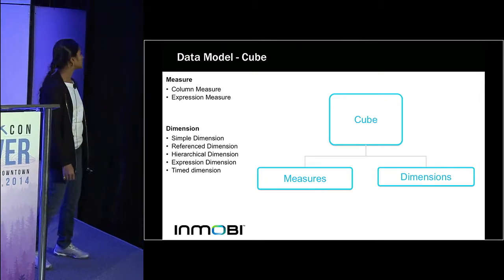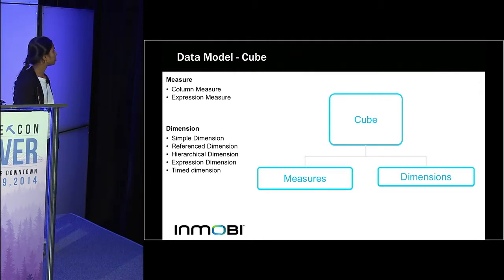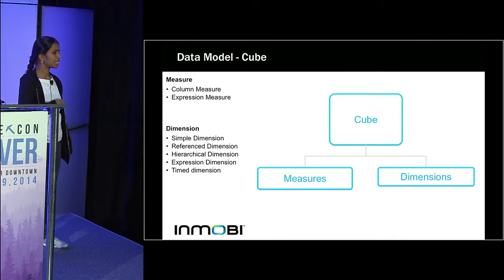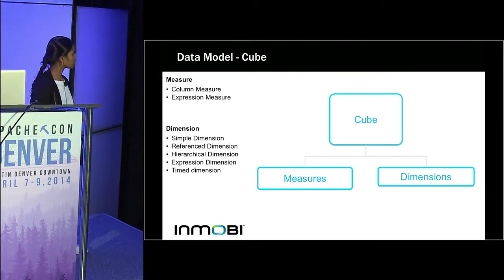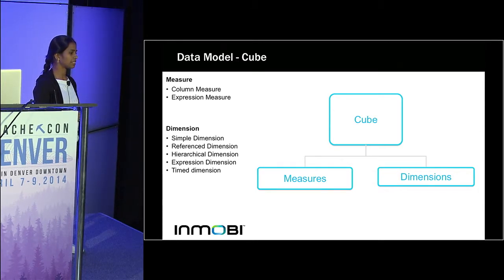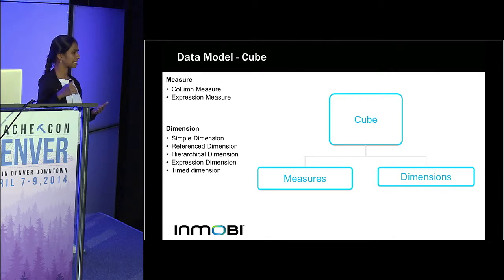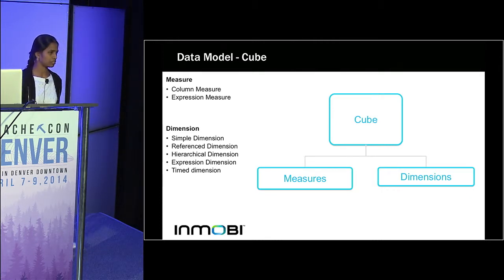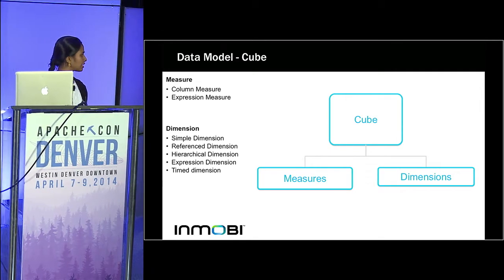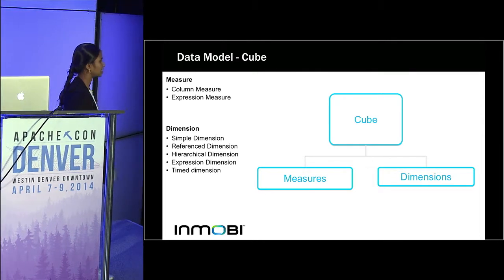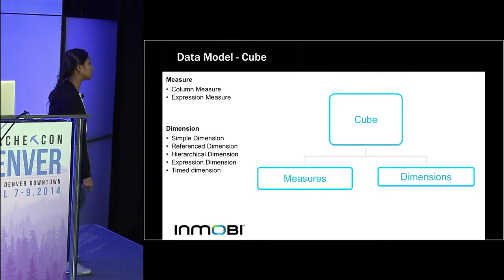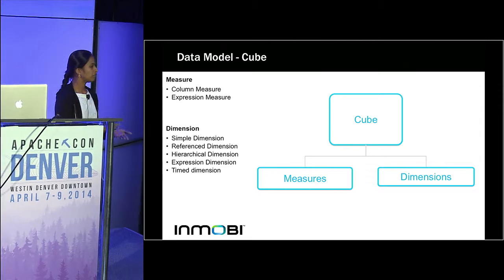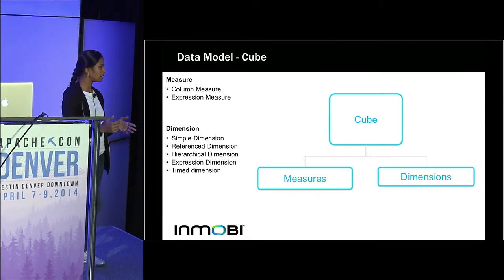A dimension is a simple column with a name and type, or a reference dimension which references another table — more like a foreign key in RDBMS — referring to another table on a column. Or it can be a hierarchical dimension, like location, which can have a hierarchy: zip code, city, state, country, region. A hierarchical dimension has an associated hierarchy, and an expression dimension has an expression that can be replaced at query time. A dimension can also be a time dimension, on which you can give time range queries — for example, querying for one month on this time dimension.